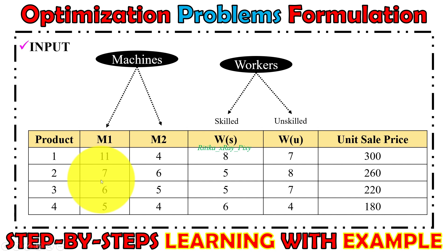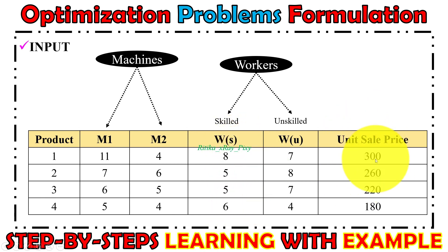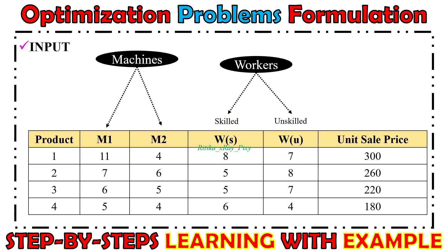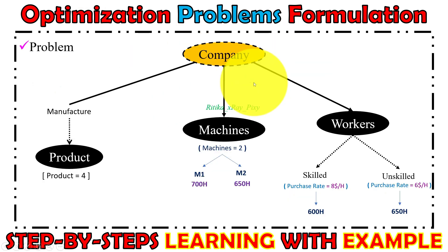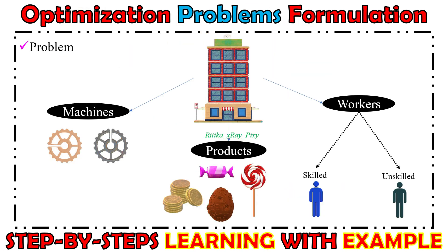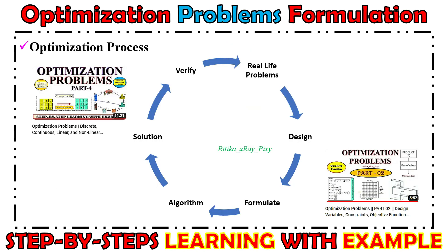Here in this table you can see all important details: machine time in hours, workers available in hours, and unit sale price. Now we will try to formulate this problem. First we have a real-life problem — here we want to maximize the company profit. This is the maximization problem. Next, for this problem we will design a model.